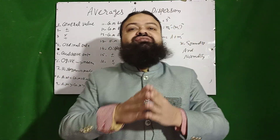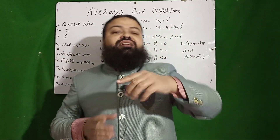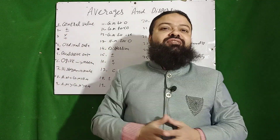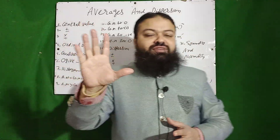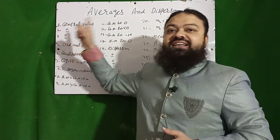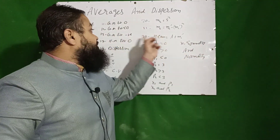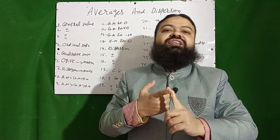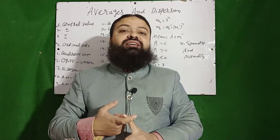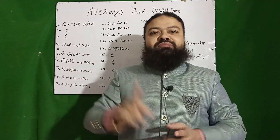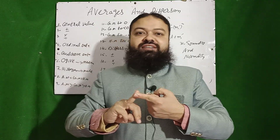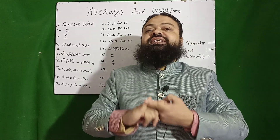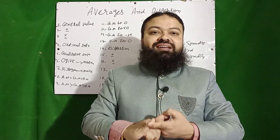Next: dispersion. The scatteredness of the values around the central value is called dispersion. Unlike the five averages which are all affected by change of origin, in dispersion — range, quartile deviation, mean deviation, and standard deviation — all these are independent of origin. If I add a constant value like seven to every value of the data set, range will not be affected, mean deviation will not be affected, quartile deviation will not be affected, and standard deviation and variance will not be affected. All measures of dispersion are independent of origin.